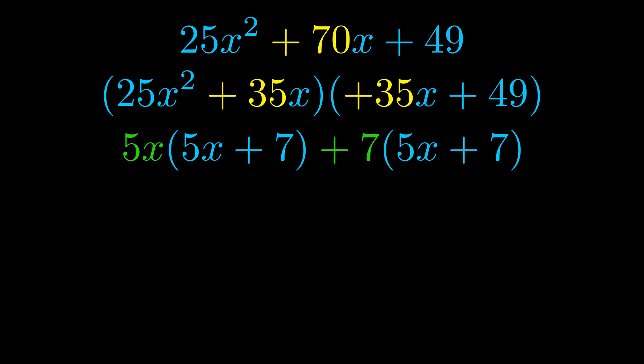Notice also how what remains inside of the parentheses is the same in both cases. The blue values are the same. Those blue values will become one of our factors and we will combine the two green values, the GCFs that we pulled out, to get the other one. And that is our fully factored equation.